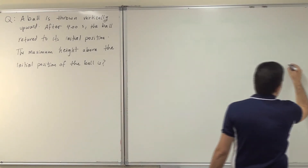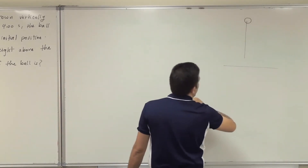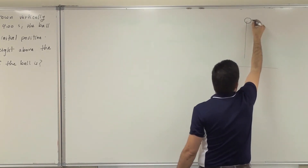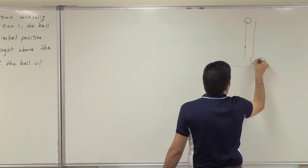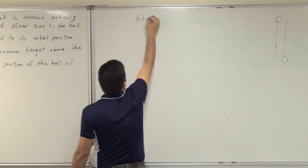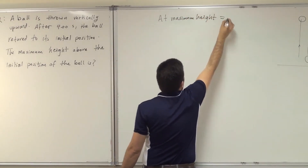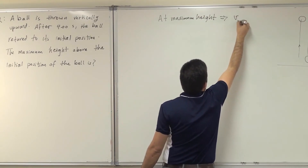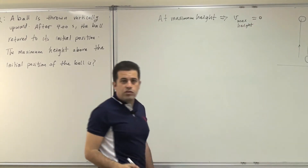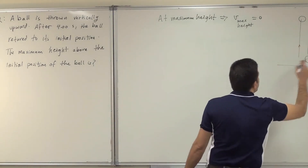A simple sketch will show that there is a ball. This ball is thrown vertically upward and then it reaches the maximum height. Then that ball will return back to the ground. At maximum height the ball will stop, so v at max height will equal zero. That's why it reaches maximum height — it stops at maximum height. The time for the whole trip is 4 seconds.